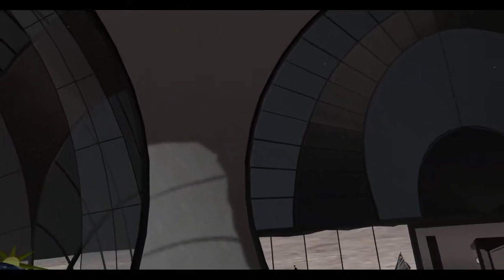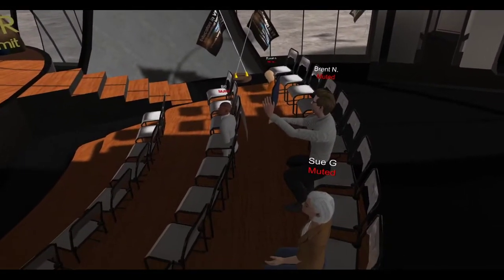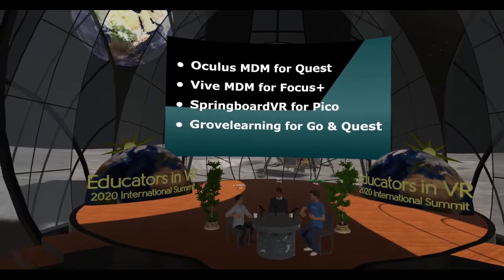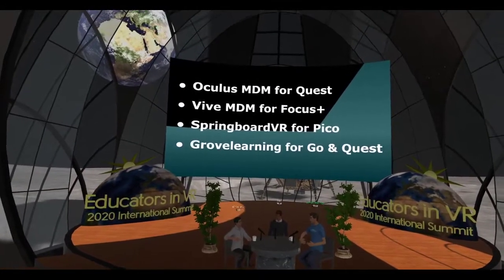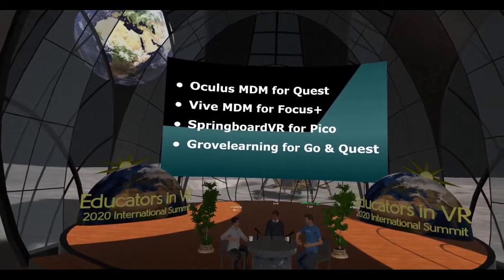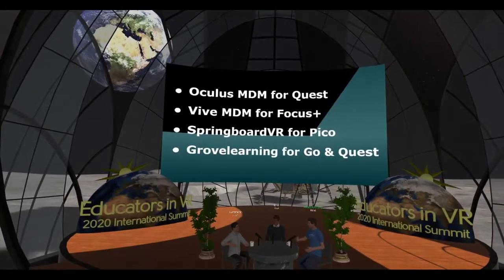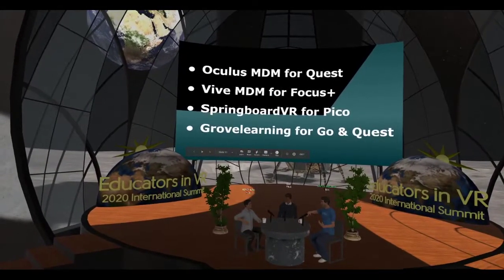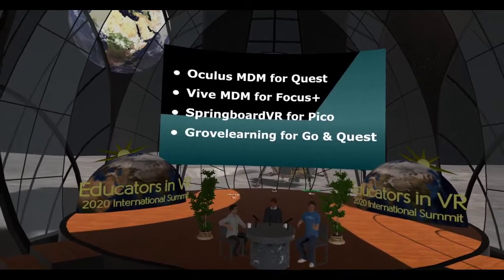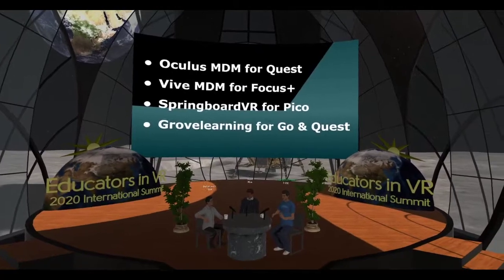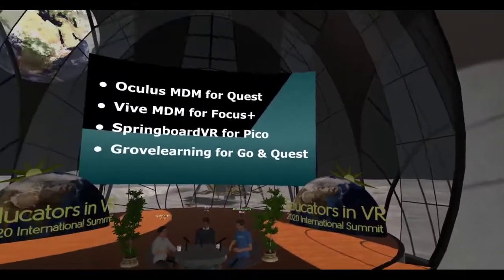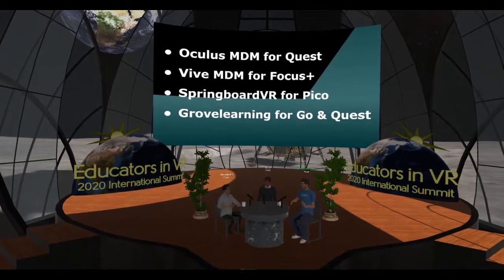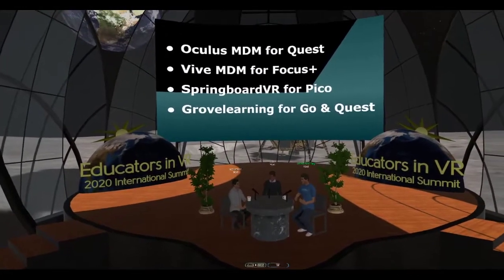Grove Learning is different — instead of being IT-based, it's grounded in the classroom teacher. How do we manage what children are doing effectively? How do we keep them safe and drive them to the experiences we want them to have? Also, Springboard with Pico — if you don't know Pico, I highly recommend looking into them. Their hardware is world-class and these management systems really solve a lot of logistic problems in the classroom.